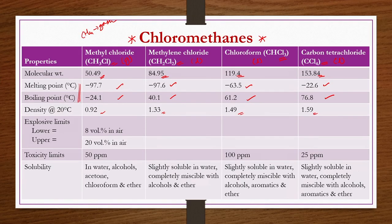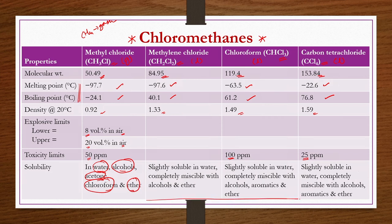Since methyl chloride is in gaseous form, its presence in air is explosive; the lower and upper explosive limits are 8 and 20 volume percent respectively. Toxicity limits are 50 ppm for methyl chloride, 100 ppm for chloroform, and 25 ppm for carbon tetrachloride. Methyl chloride is soluble in water, alcohol, acetone, chloroform, and ether, whereas the remaining three are only slightly soluble in water but completely miscible with alcohols, ethers, and aromatics.